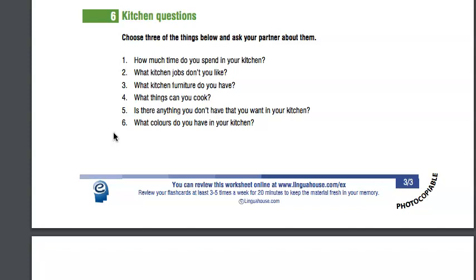You could choose three of those questions, write the answers down, and take a photograph or send me an email. For example, kitchens in Mosney are quite small, so maybe you don't have a washing machine and would like one when you move to your new house. Maybe you'd like a dishwasher. Let me know - send a photograph or email. Hope you enjoy this, talk to you soon, bye!